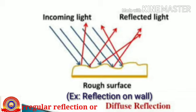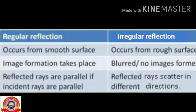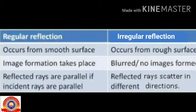In irregular reflection, light undergoes reflection but no image is formed. In dust particles or the atmosphere, light undergoes scatter reflection — this is called scattering. Looking at the differences: regular reflection occurs from a smooth surface and image formation takes place; if incident rays are parallel, reflected rays are also parallel. Irregular reflection occurs from a rough surface; no images are formed, or sometimes blurred images are formed, and reflected rays scatter in different directions.